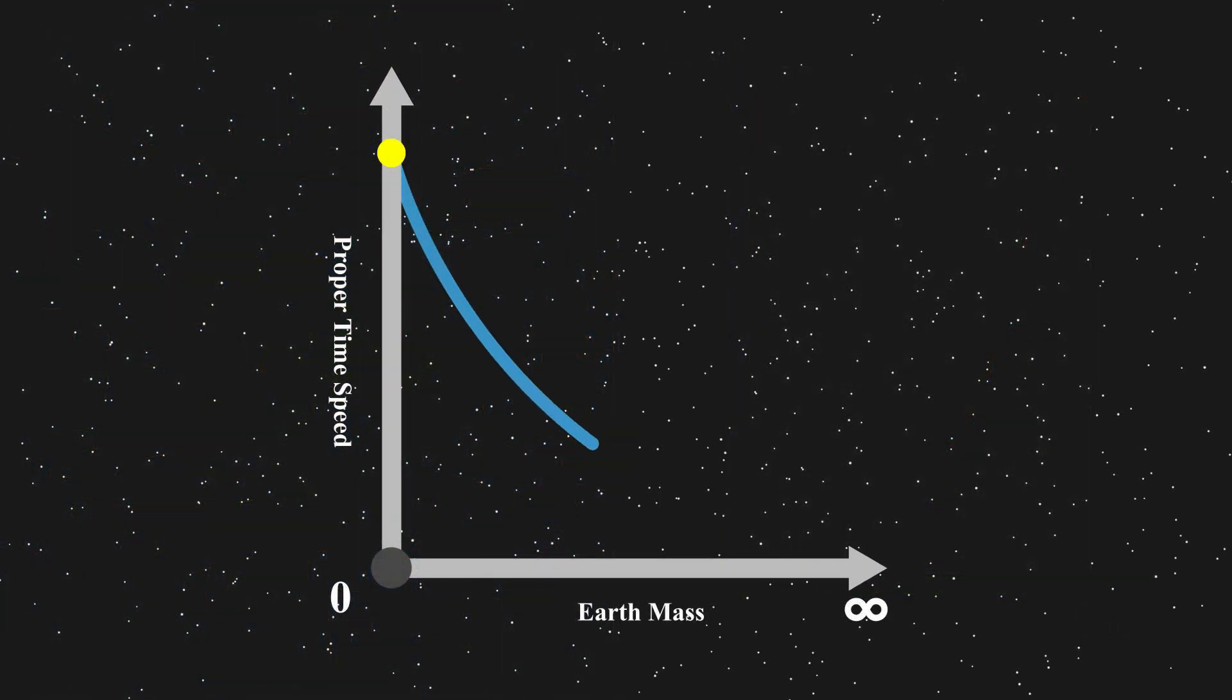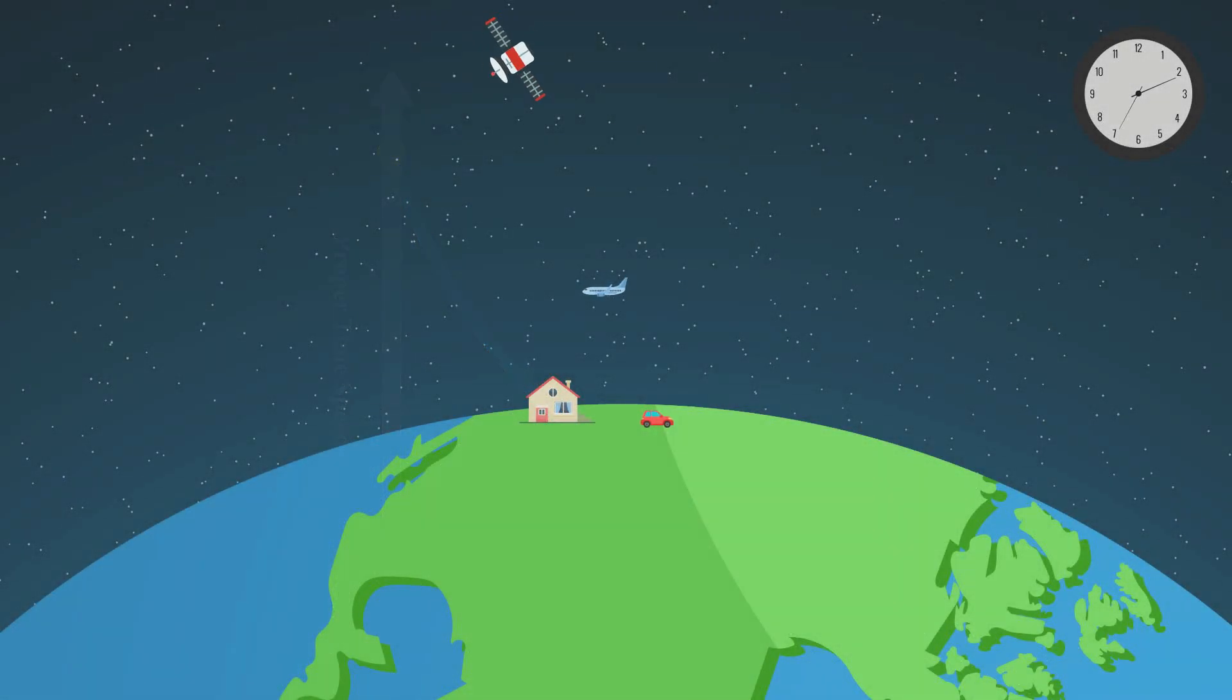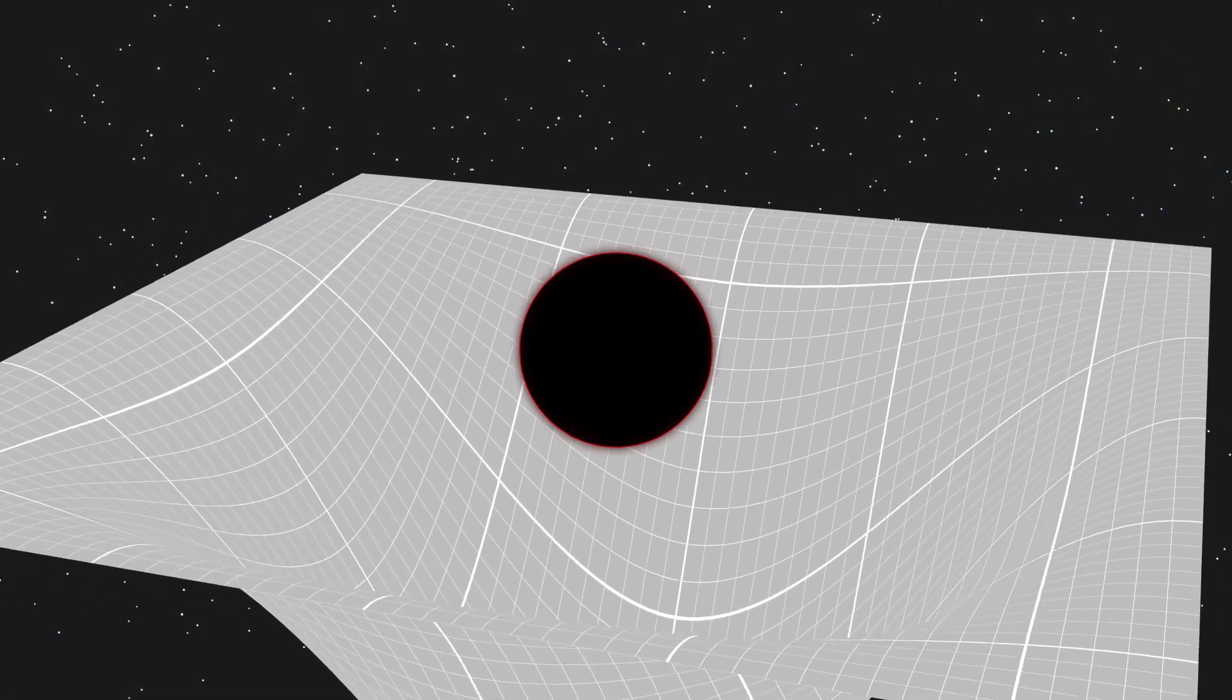Imagine if Earth's mass could be increased at will, then time near the Earth would slow down more and more. How slow could it go? In the most extreme case, time could come to a complete stop. When time stops, nothing moves. No motion means no escape, creating a perfect trap for everything including light. In this case, a black hole is created.